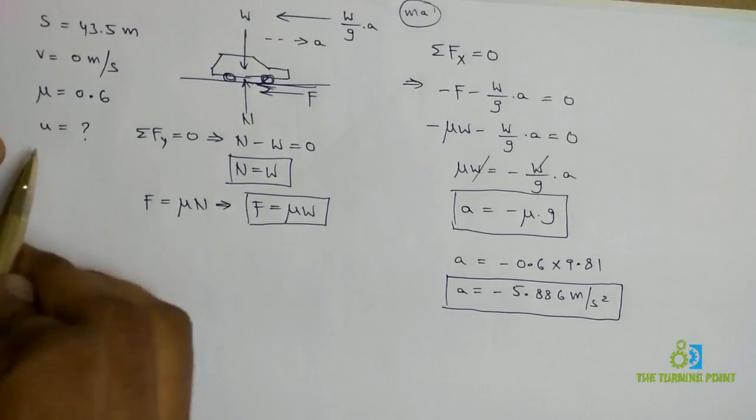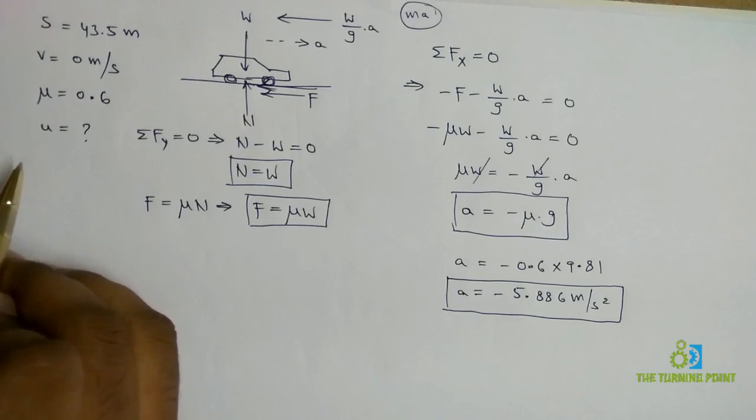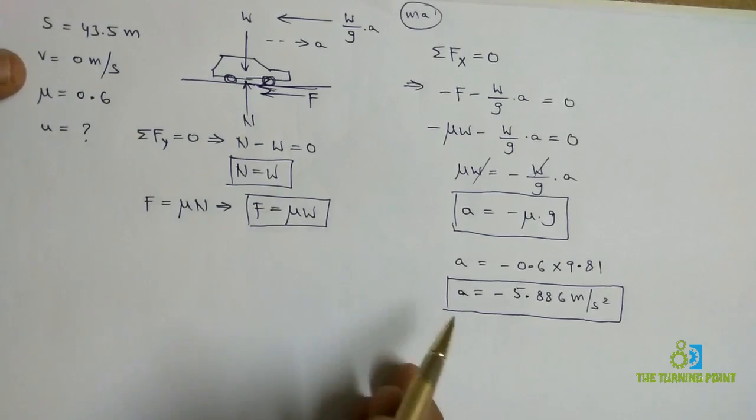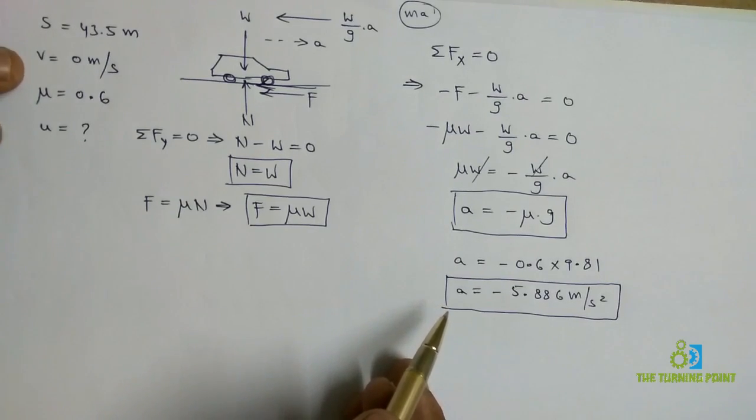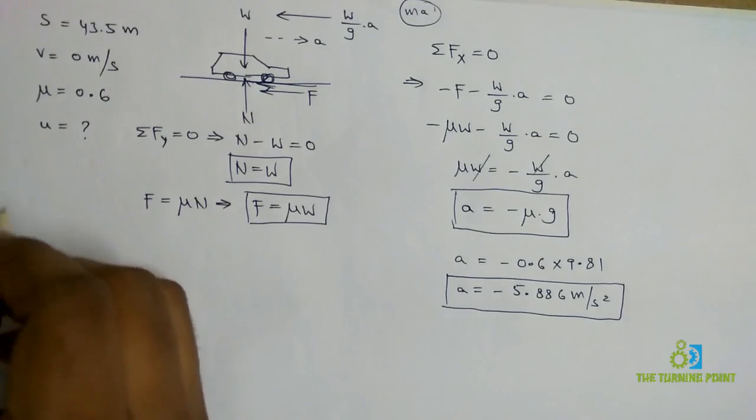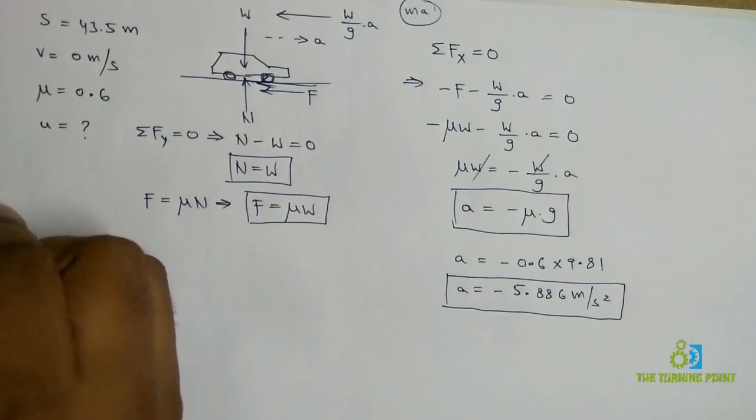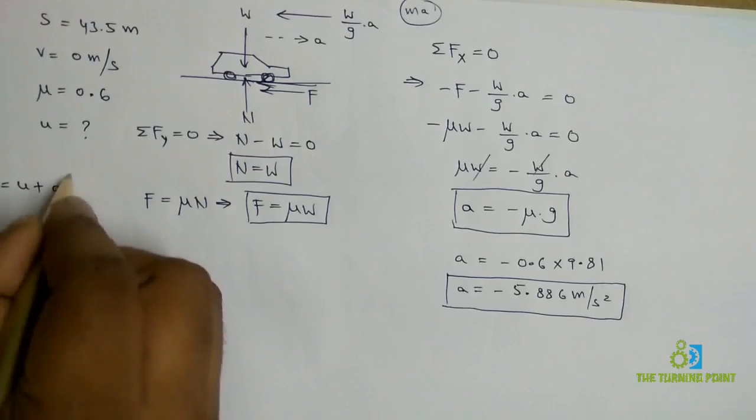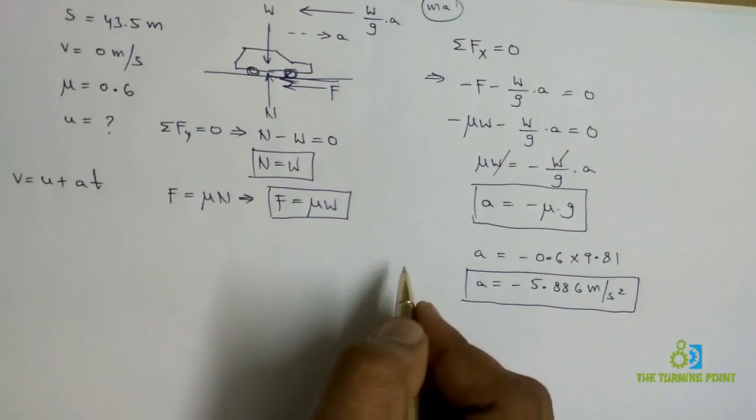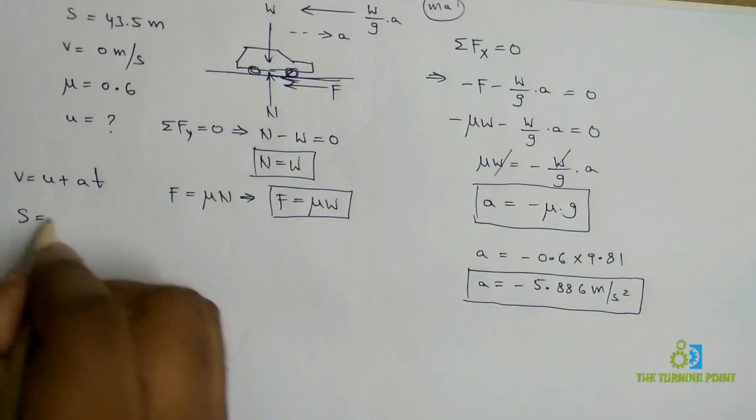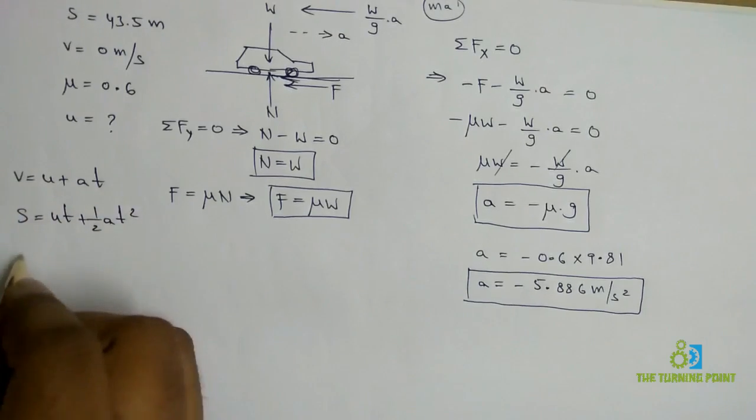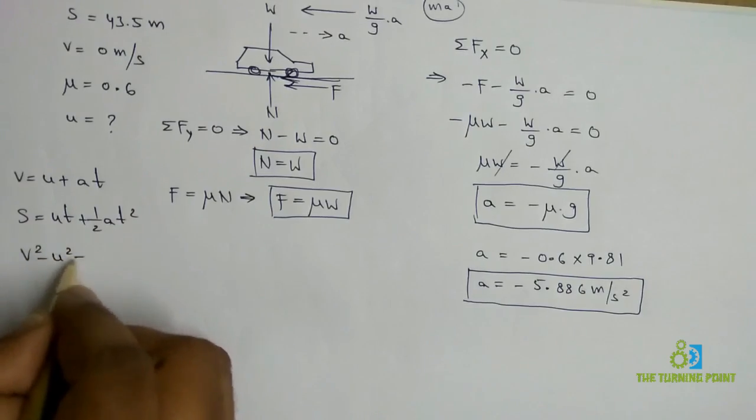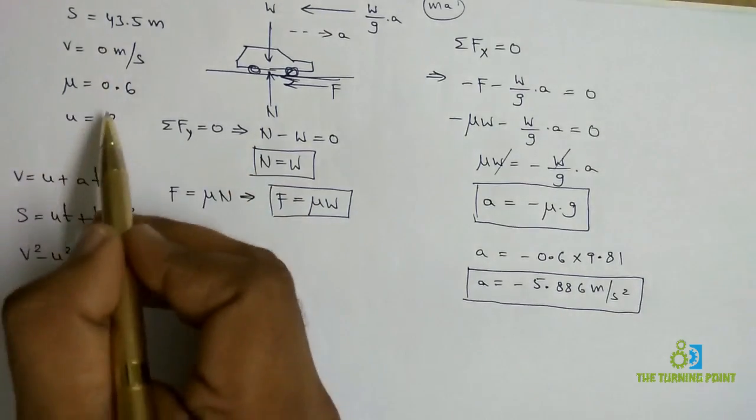What it is asked to calculate is initial velocity. I know the displacement, I know the velocity, I know the acceleration. I don't know the initial velocity. So there are three equations: V = u + at, S = ut + ½at², and V² - u² = 2aS.